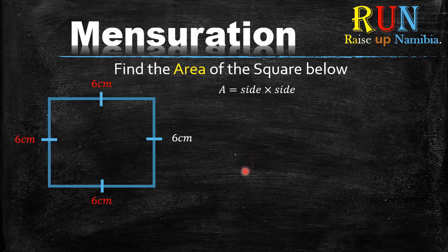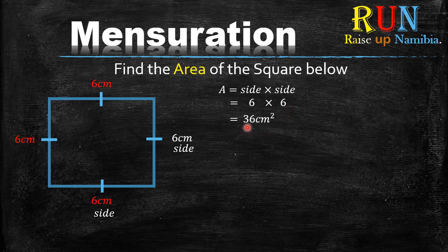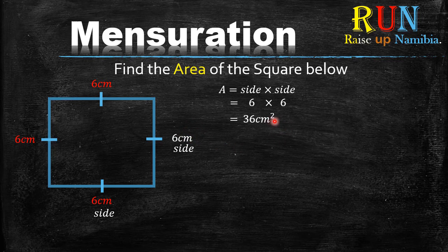Using the formula side times side, you multiply six by six. Six multiplied by six gives you 36 centimeters squared, because we are calculating area. If you were given meters, it would become meters squared. That is your final answer.